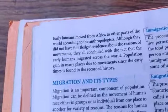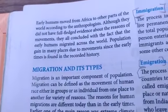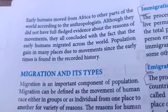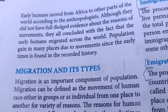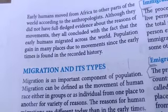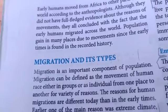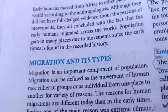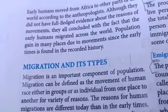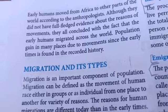Whenever I tell you to underline, please take your pencils and start underlining. Now we all know what migration is. Early humans moved from Africa to other parts of the world according to anthropologists. Although they did not have full-fledged evidence about the reasons for movement, they all concluded that early humans migrated across the world — people moving as a whole from one place to another.